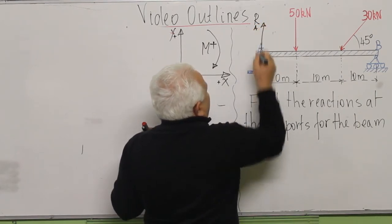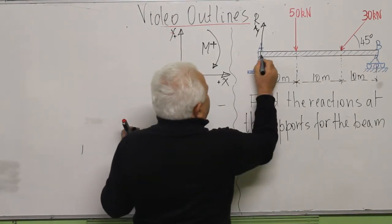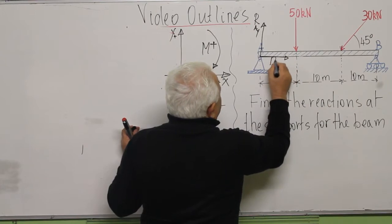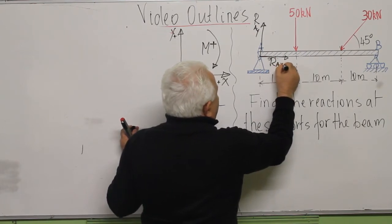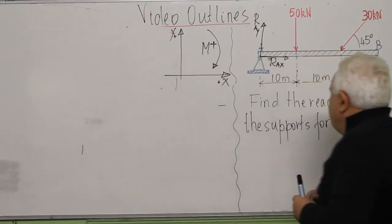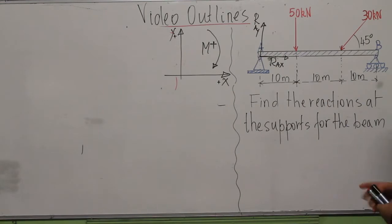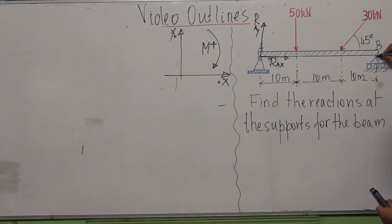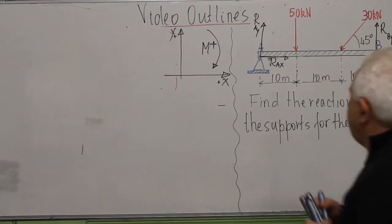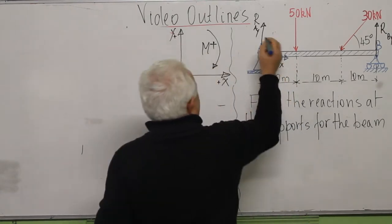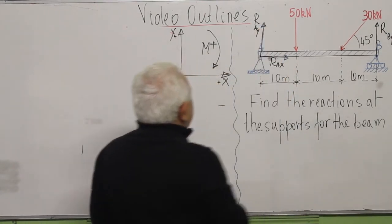The force has a component along Y and another component along X. At point A we have a hinge — a pin — so there is a reaction component R_AX along X and R_AY along Y. For the roller at B, it will only oppose vertical movement, so there is only R_BY along Y — there is no component along X for the roller.